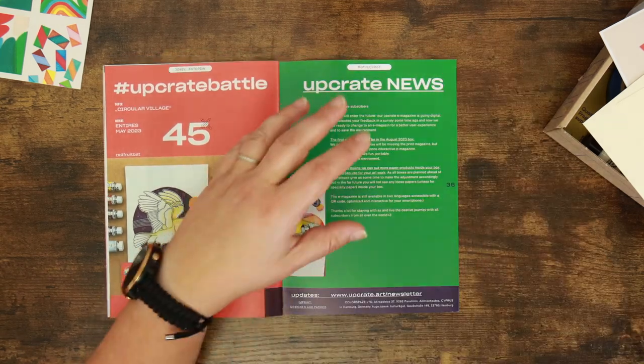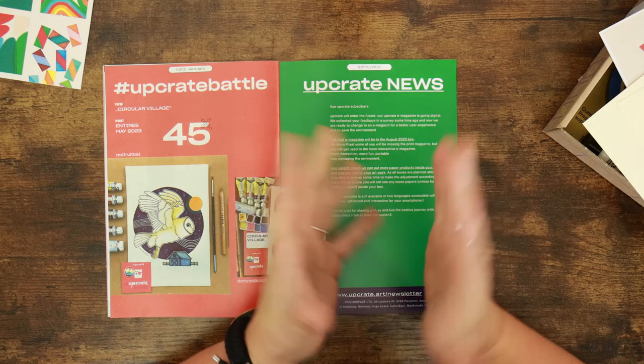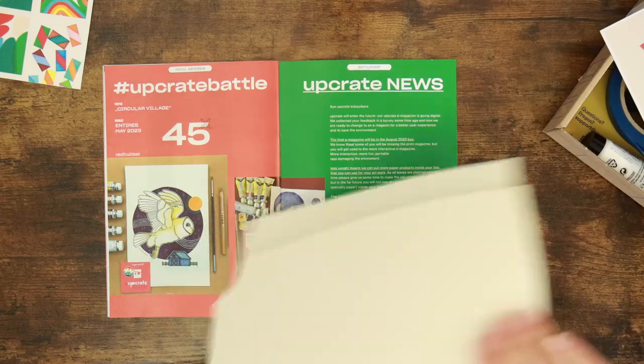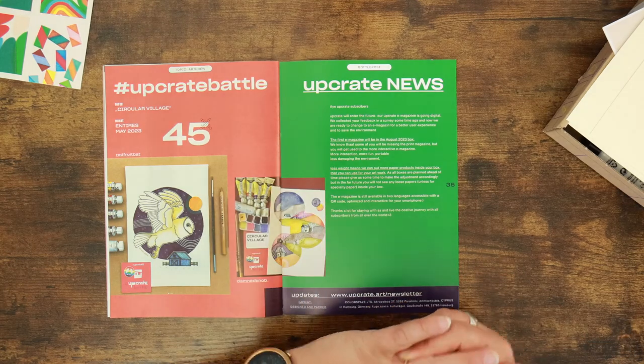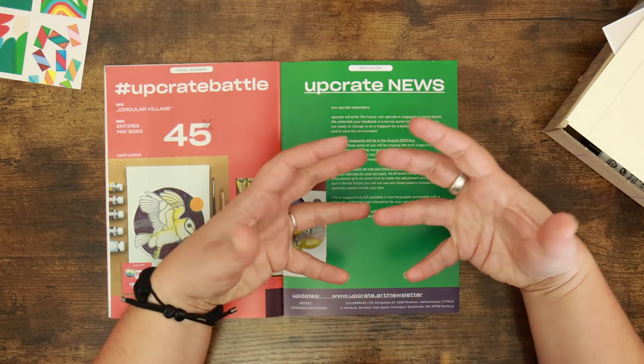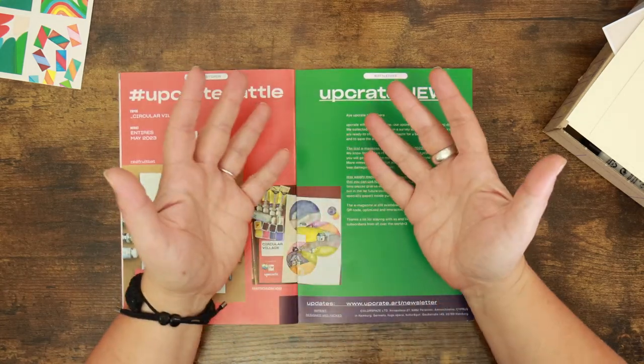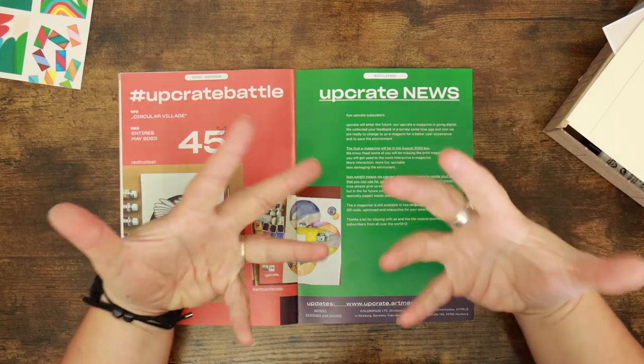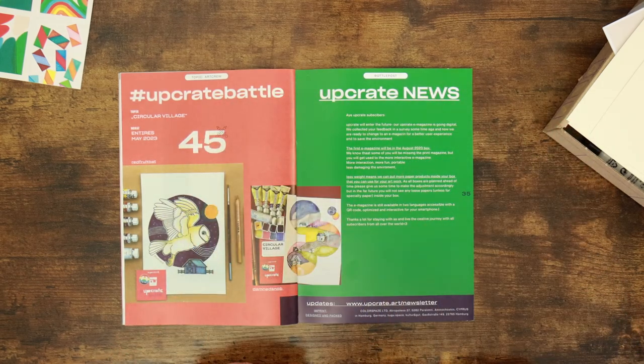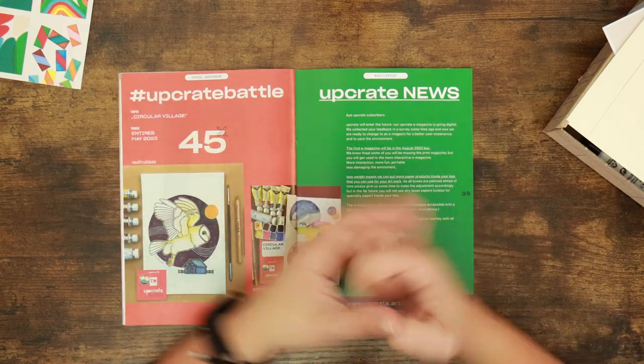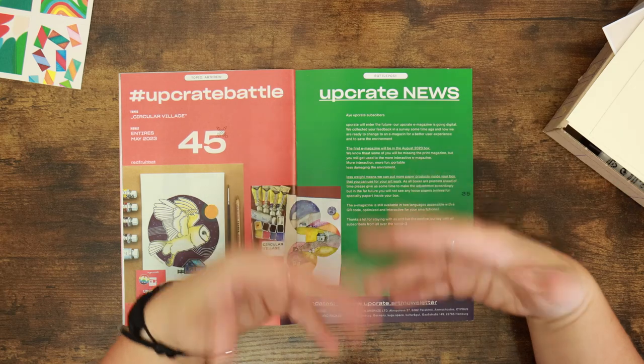Oh, we've got Upcrate News. Upcrate are changing to an electronic magazine. I'm really unhappy about that. The box just will lack substance. As a substitute, though, what they're saying is we're going to get more paper in the boxes. So we're not going to get loose paper anymore. It's more likely to be pads of paper. So I can see the trade-off. But a huge part of these boxes for me is not actually what's in the boxes. It's the experience and what you can get out of it. And this is a huge part of that. And looking at stuff on a screen, I can do that. I'm sick of seeing stuff on screens. I do traditional art to get away from screens.